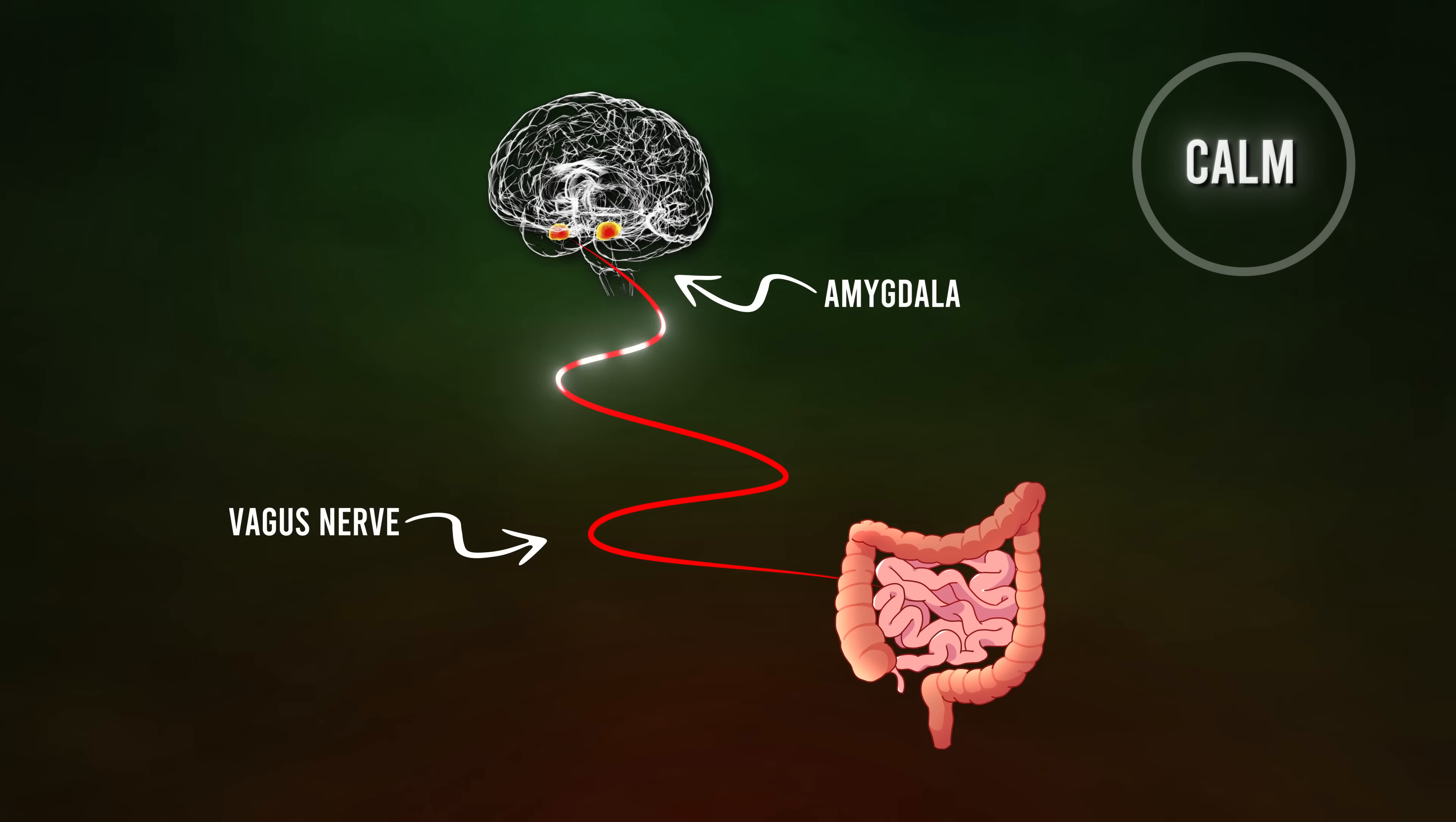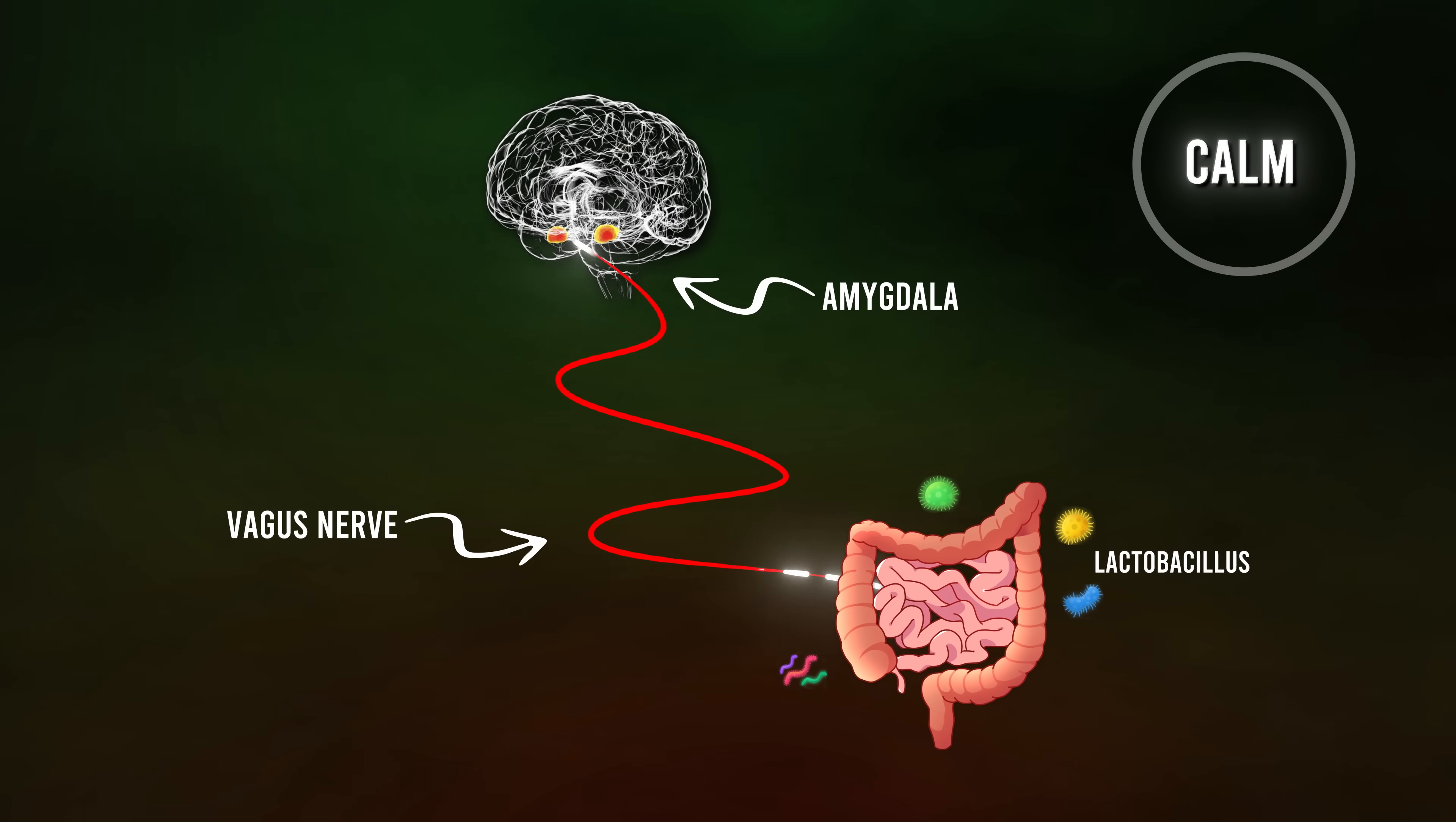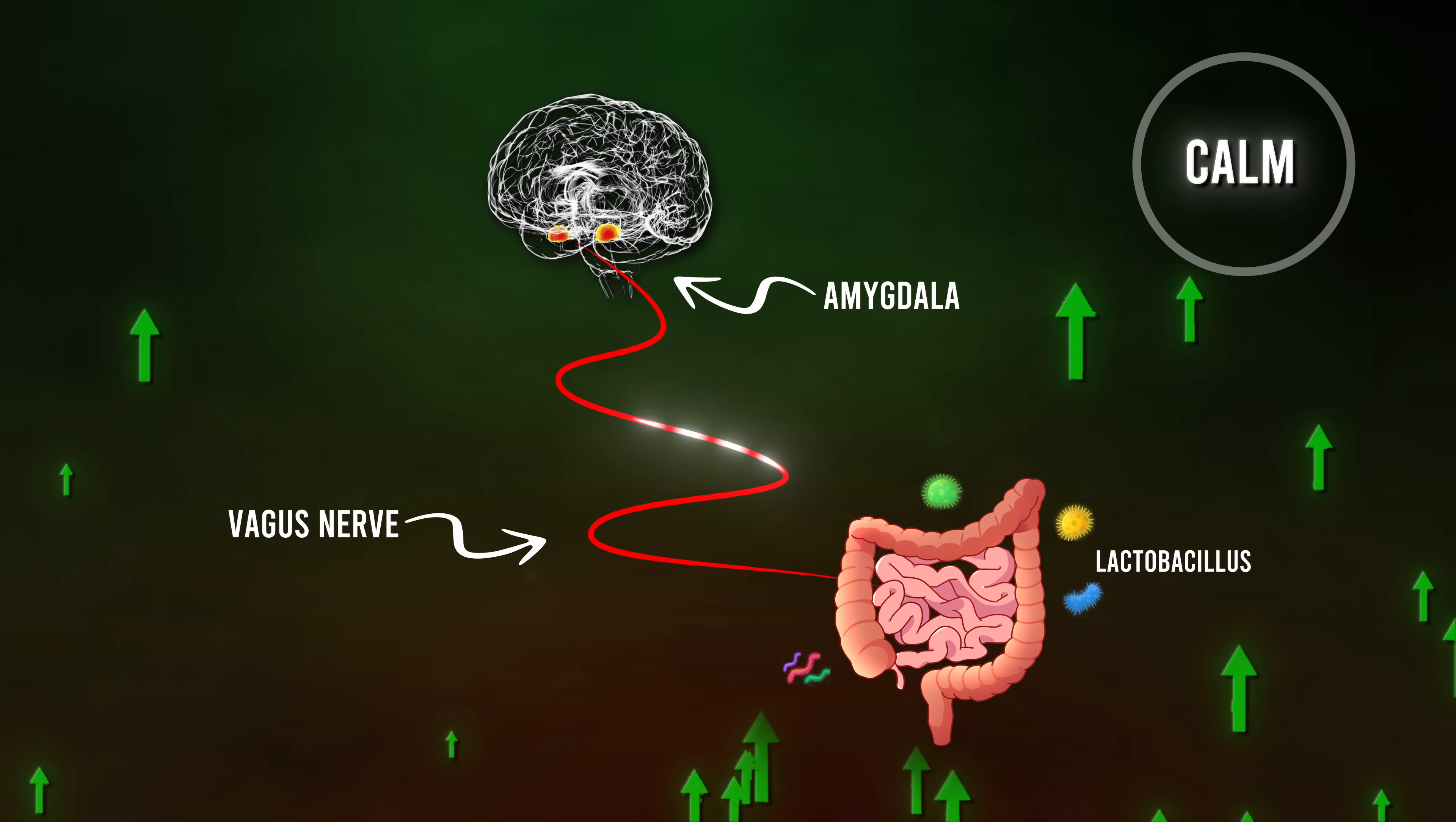So in summary, these data are consistent with a model whereby the central amygdala in the brain signals through the vagus nerve to increase secretions from Bruner's glands, which feed lactobacillus, leading to better gut barrier function, better autonomic tone, less GI upset, less bloating, and overall better GI function.